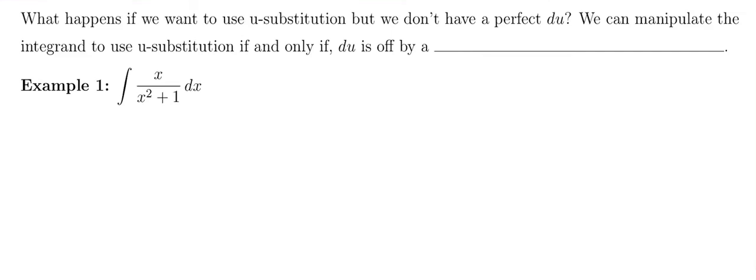All right, so now we're going to look at what happens if we want to use u-substitution, but we don't have a perfect du when we go to sub back in. It's totally fine. We can manipulate the integrand to use u-substitution if and only if du is off by a constant.